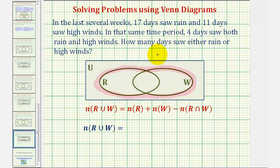The formula for this says the number of elements in R union W is equal to the number of elements in set R, which would be the number of elements in this set here, plus the number of elements in